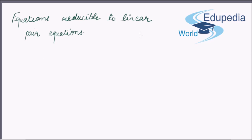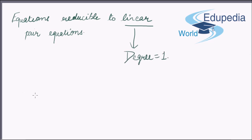Friends, by linear pair we mean a pair in which each equation has degree equal to one. Thus in simple words, we will be converting a non-degree-one pair to a degree-one pair.